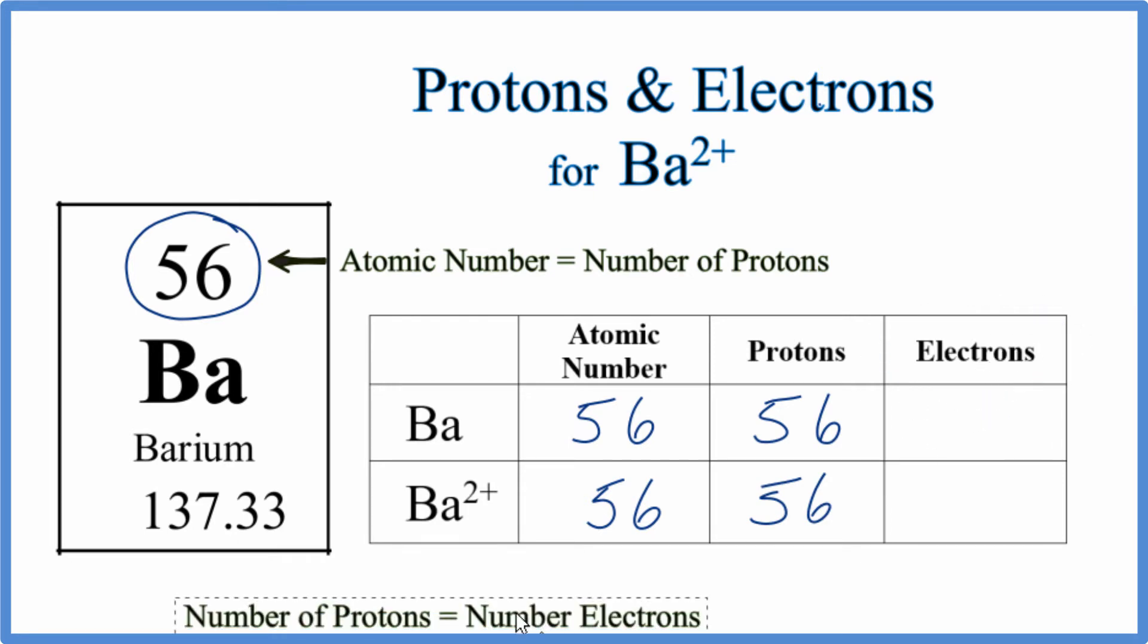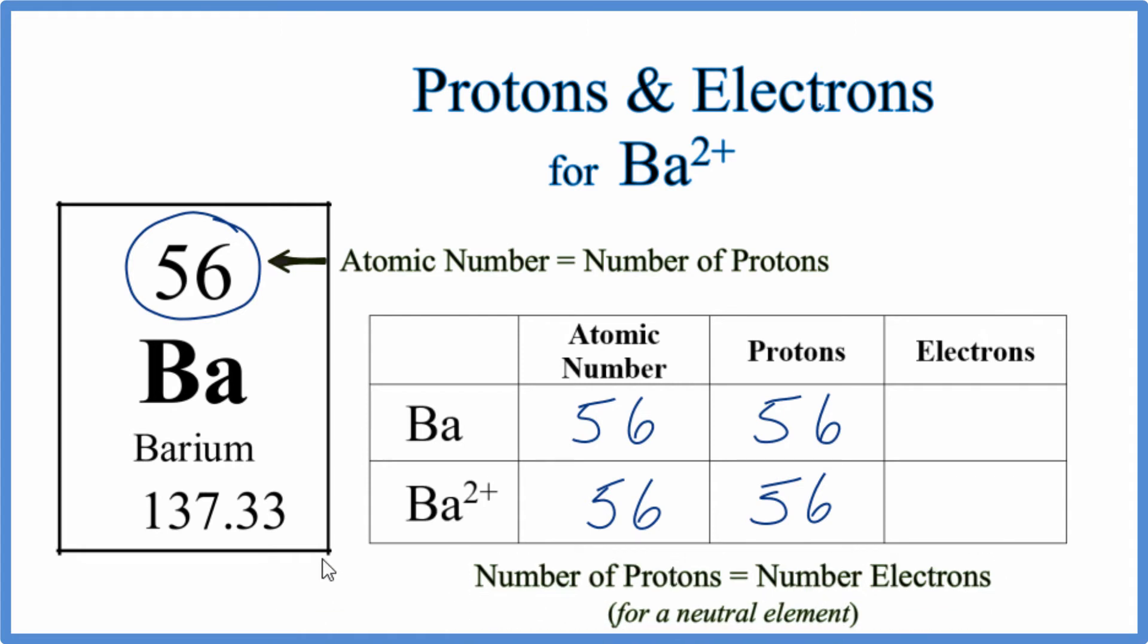When we have a neutral atom, like the barium on the periodic table, the number of protons equals the number of electrons. That's why it's neutral. The positive and the negatives, they're the same. So number of electrons for neutral barium, 56. Same as the protons.